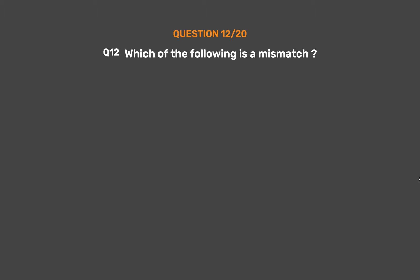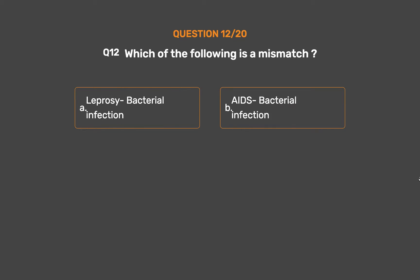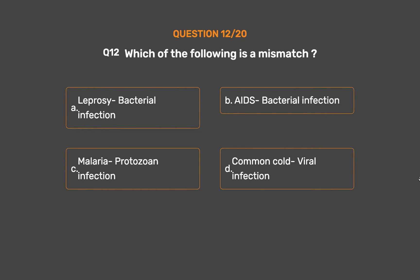Question number 12. Which of the following is a mismatch? Option A: Leprosy — bacterial infection. Option B: AIDS — bacterial infection. Option C: Malaria — protozoan infection. Option D: Common cold — viral infection.